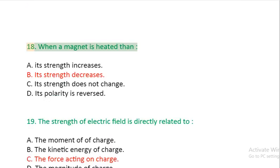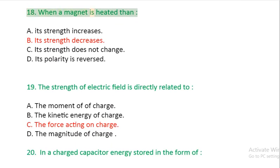Question 18: When a magnet is heated then: A: its strength increases. B: its strength decreases. C: its strength does not change. D: its polarity is reversed.